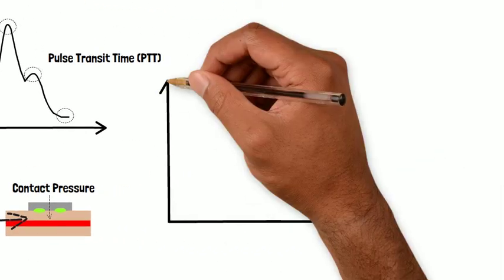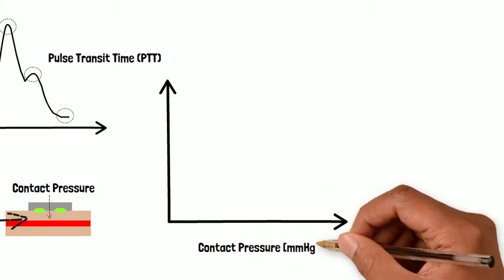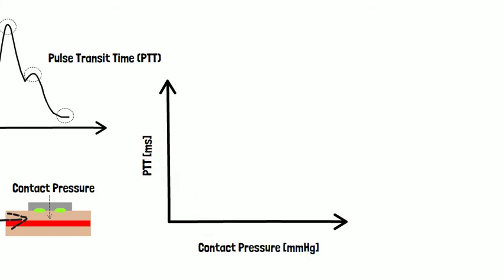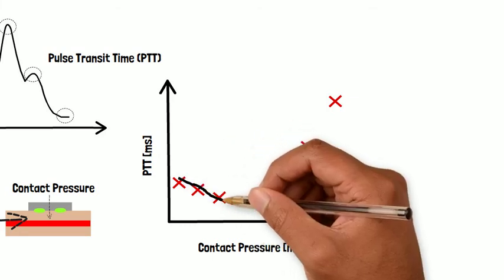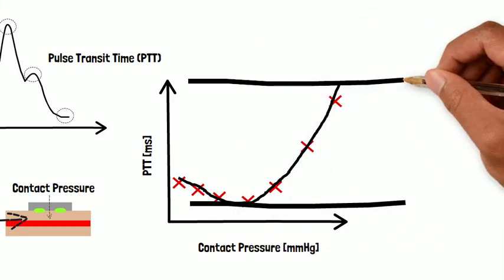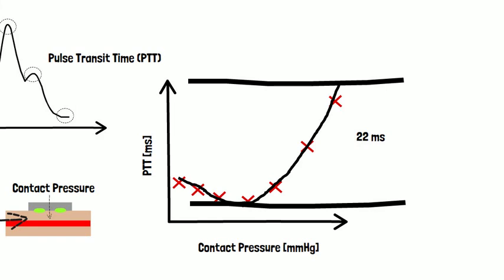We observe that contact pressure of the PPG sensor changes PTT significantly and the PTT versus contact pressure curve has a U-shape with a maximum variation of 22 milliseconds. These variations in PTT cannot be ignored and may translate to a BP error as significant as 11 mmHg.